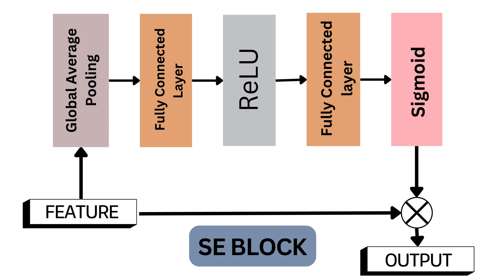The simplicity of global average pooling in the squeeze module and the increased model complexity introduced by fully connected layers have prompted efforts to enhance the SE block. This has led to strategies aimed at improving the squeeze module itself, reducing overall model complexity by refining the excitation module, or simultaneously enhancing both the squeeze and excitation modules.